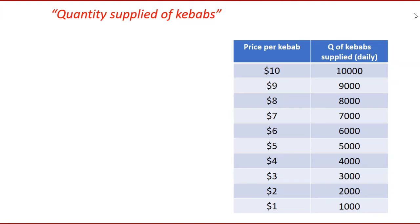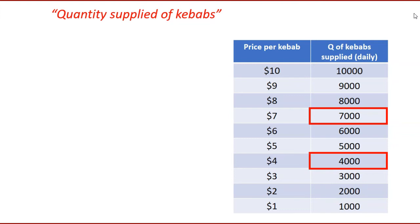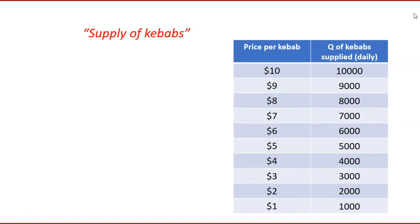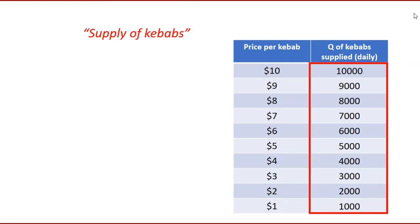We need to clarify a little bit of terminology. When we say 'quantity supplied' of kebabs, we mean particular quantities — for example, if the price were seven dollars then seven thousand kebabs would be supplied. But when we use the term 'supply' of kebabs, we mean all of the possible quantities that could be supplied at the various corresponding prices. The terminology is important because it could be quite confusing if you mix the two up.